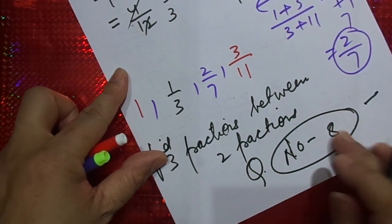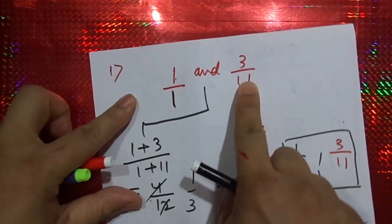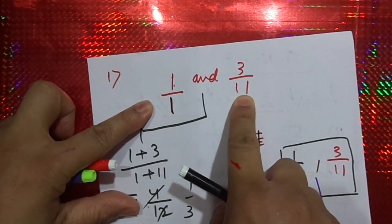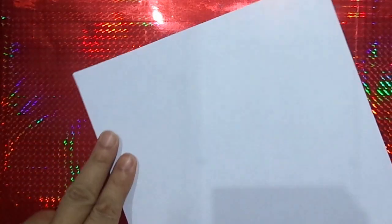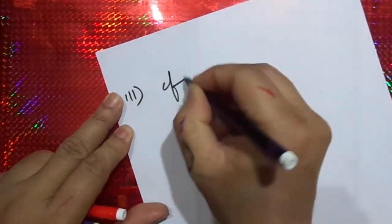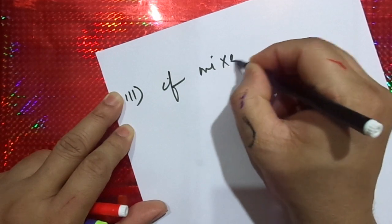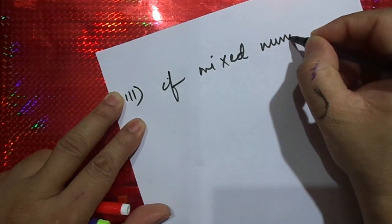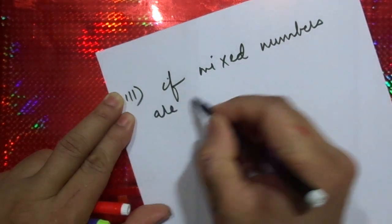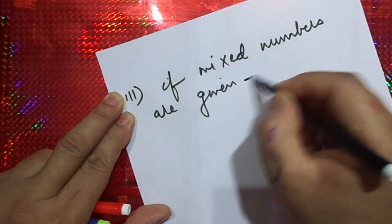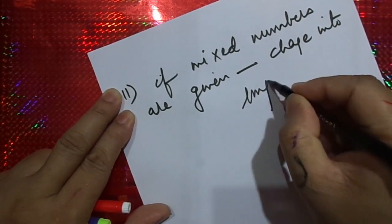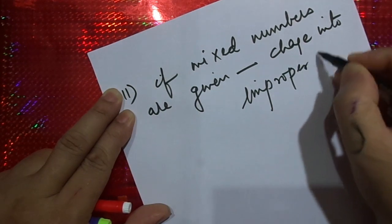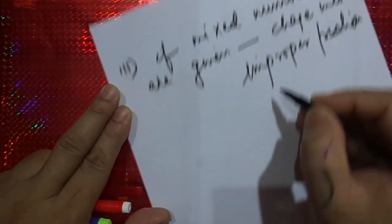If mixed numbers are given in any of these problems, for example if they give you mixed numbers instead of fractions, first change them into improper fractions. Once converted to improper fractions, your task will become very easy.